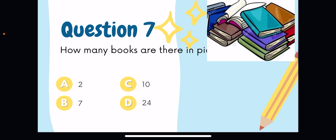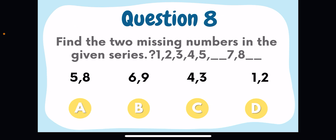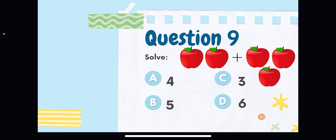The next question asks how many books are there in the picture. Count the books in the image — the total number of books is option C, 10. The following question asks you to find the two missing numbers in the series: 1, 2, 3, 4, _, 7, 8, _. After four comes five and six, and after eight comes nine. So six and nine, found in option B, is the answer.